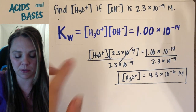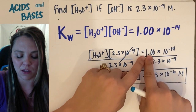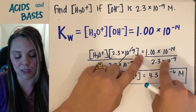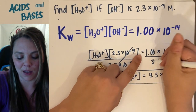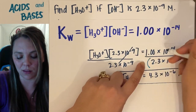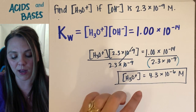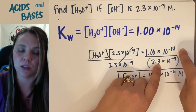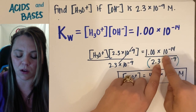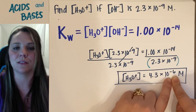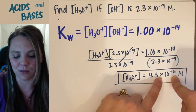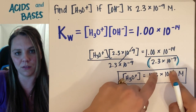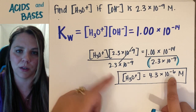A tip for your calculator: when solving this division, type 1 × 10⁻¹⁴ divided by, then put parentheses around 2.3 × 10⁻⁹. The reason is that some calculators see the multiplication sign in the scientific notation and think it belongs back on the numerator, giving you something ridiculous like 4.3 × 10⁻²³. Always use parentheses on the denominator so you don't miss the problem by pressing buttons wrong.